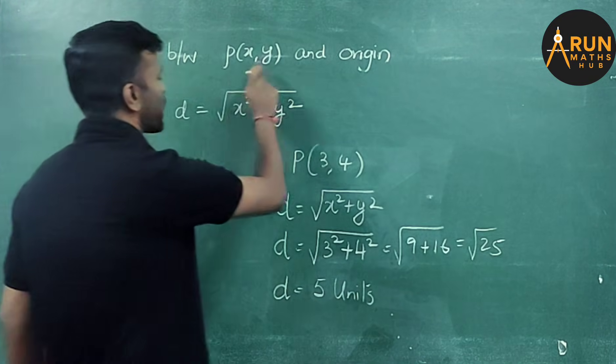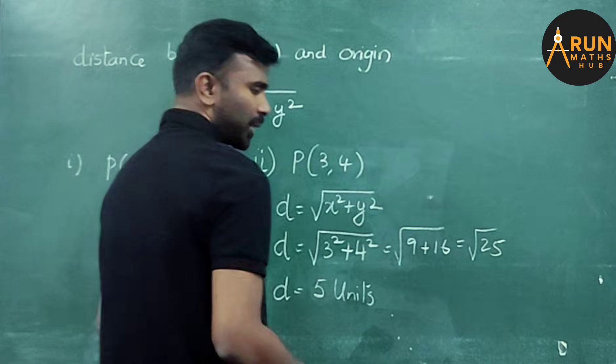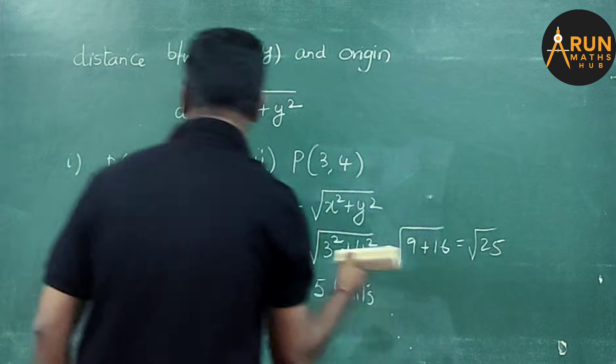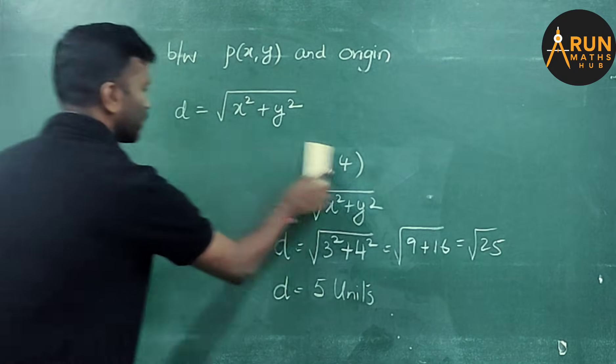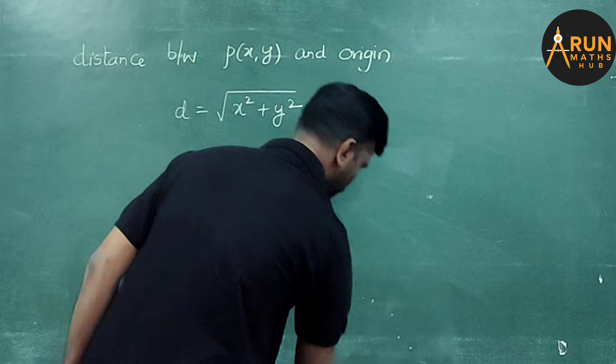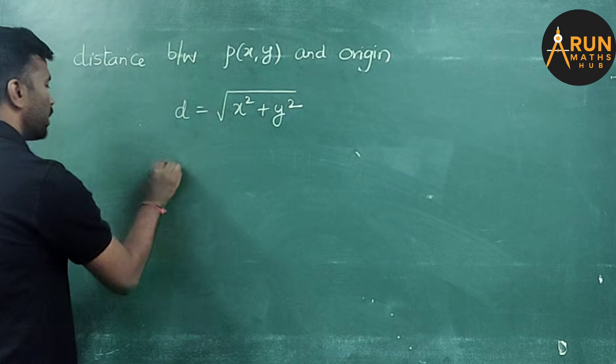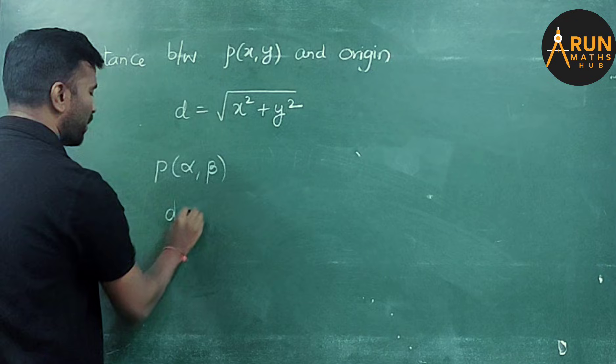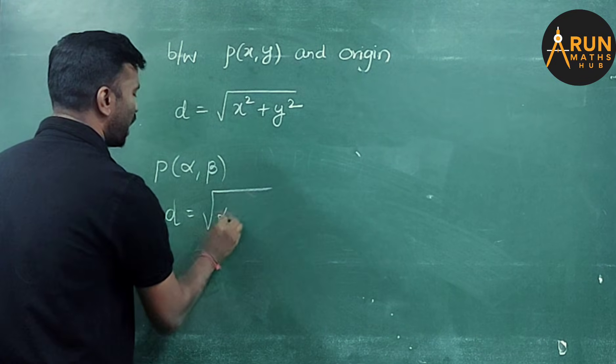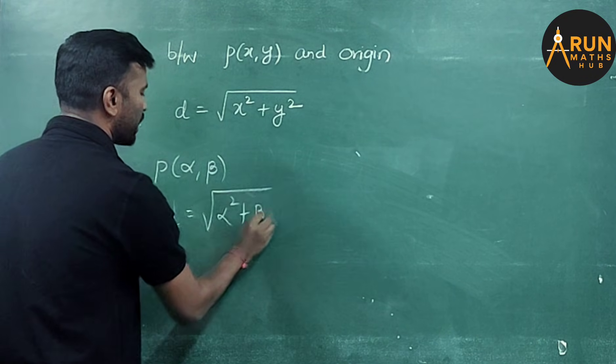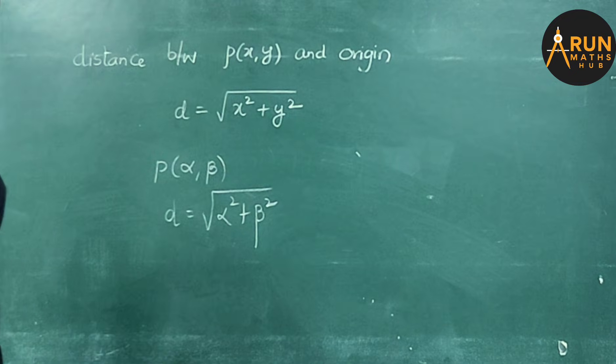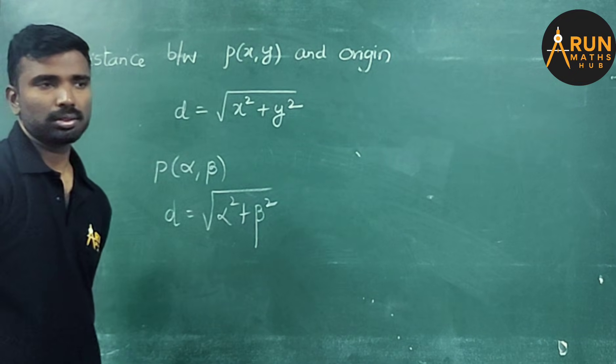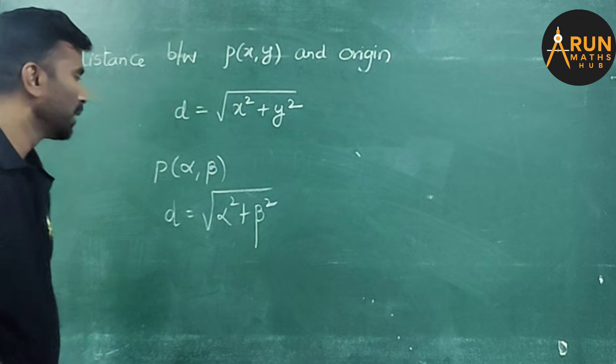Instead of x and y, if they ask you P of alpha comma beta, the distance formula will be d equals square root of alpha square plus beta square. This is a very simple problem to score 1 mark. Understood? Yes, sir.